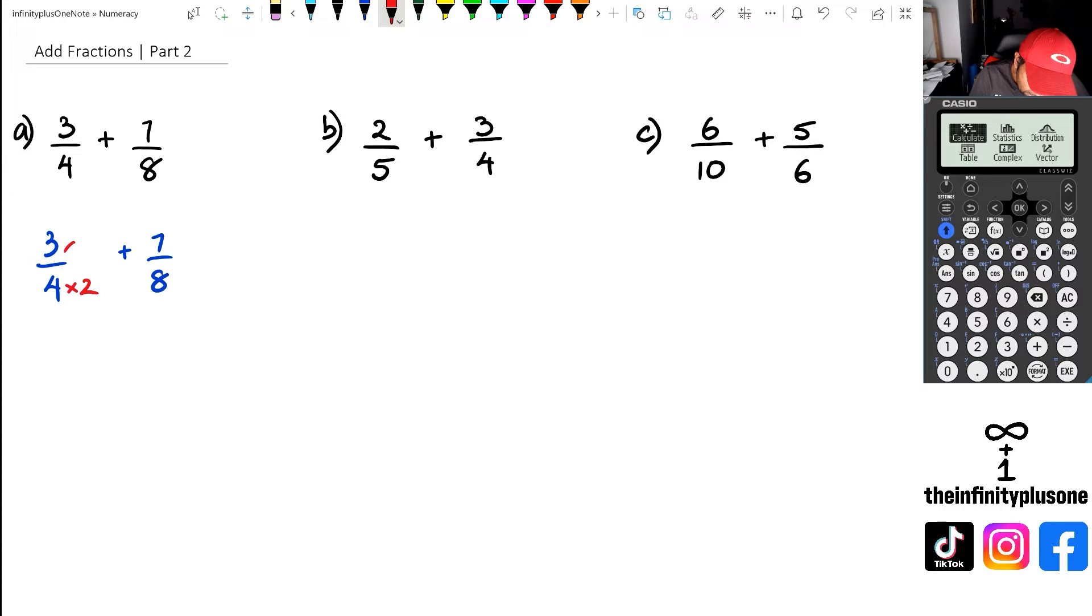So we're looking for an equivalent fraction. So same thing as saying multiplied by two at the top, and multiplied by two in the bottom of that fraction. Now, when we do this, we're going to get three times two, which is six, and then four times two, which is eight.